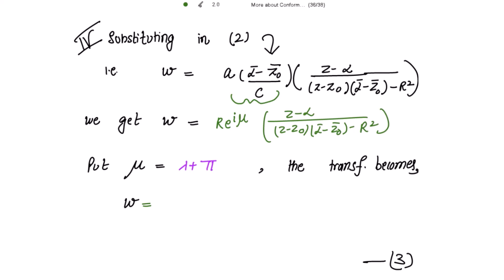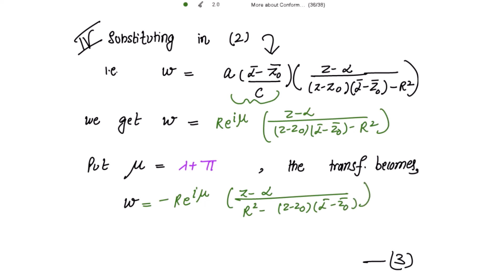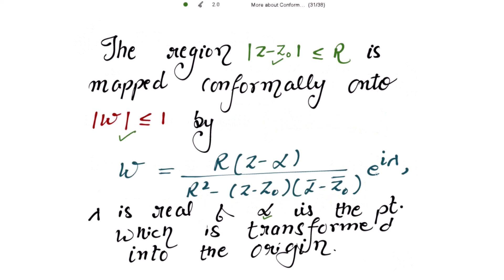As the theorem requires the denominator to be r² - (z - z₀)(ᾱ - z̄₀), but we have (z - z₀)(ᾱ - z̄₀) - r², we take -1 common from the denominator. This gives r · e^(iμ) · (z - α) / (r² - (z - z₀)(ᾱ - z̄₀)), with the minus sign moved to the numerator. We also need e^(iμ) to become e^(iλ), so we set μ = λ + π.